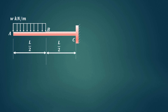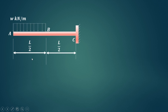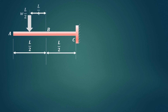For the bending moment diagram, we first convert the UDL into a point load. The UDL is W kN per meter, acting over a length of L by 2, so the total load is W into L by 2. This resultant acts at the center of that length, which is L by 4 from A. Therefore, the equivalent point load is WL by 2, acting at L by 4 from the free end.